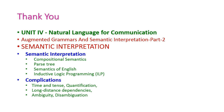So far, we have seen semantic interpretation — the second part of Augmented Grammar and Semantic Interpretation from the fourth unit, Natural Language for Communication. In this class, we covered semantic interpretation and complications. Under semantic interpretation: compositional semantics, parse tree, semantics of English, and ILP. Under complications: time and tense, quantification, long distance dependencies, ambiguity, and disambiguation. This is an important topic from the fourth unit — expect either a 5-mark or 10-mark question from it. In the next class, we will see another important topic from the fourth unit.